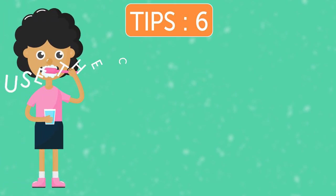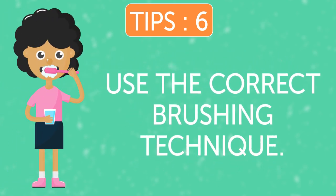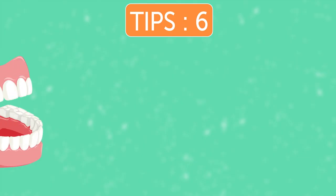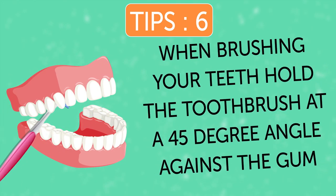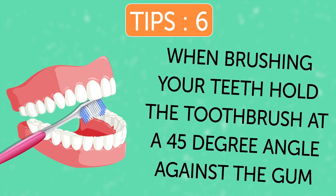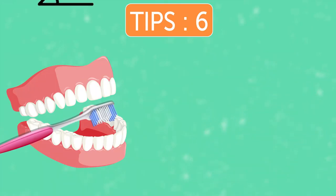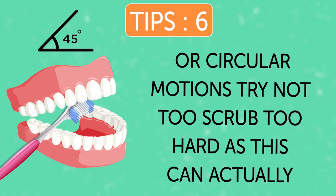Tip 6: Use the Correct Brushing Technique. When brushing your teeth, hold the toothbrush at a 45-degree angle against the gums in a short vertical back and forth or circular motion.